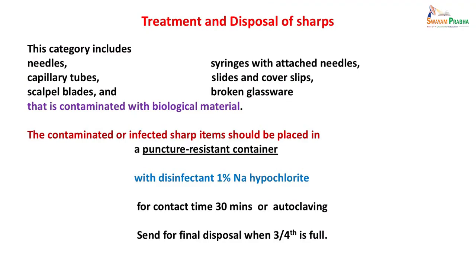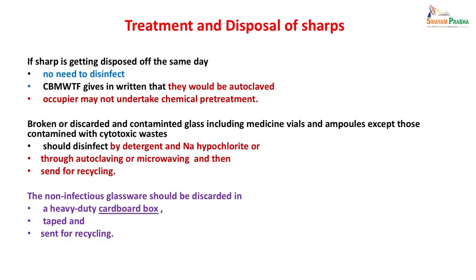For treatment and disposal of sharps — needles, capillary tubes, scalpel blades, syringes, and broken glassware contaminated with biological material — contaminated or infected sharps should be placed in a puncture-resistant container with 1% sodium hypochlorite for a contact time of 30 minutes, or autoclaved, and then sent for final disposal when three-quarters full. If sharps are disposed of the same day, no need to disinfect. Items with cytotoxic waste should be disinfected by detergent, sodium hypochlorite, autoclaving or microwaving before recycling. Non-infectious glassware can be discarded in a heavy duty cardboard box and sent for recycling.